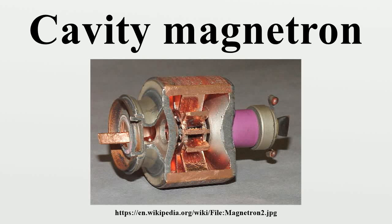The cavity magnetron is a high-powered vacuum tube that generates microwaves using the interaction of a stream of electrons with a magnetic field, while moving past a series of open metal cavities. Bunches of electrons passing by the openings to the cavities excite radio wave oscillations in the cavity, much as a guitar's strings excite sound in its sound box. The frequency of the microwaves produced — the resonant frequency — is determined by the cavity's physical dimensions.